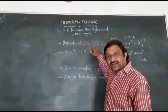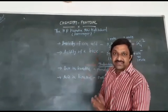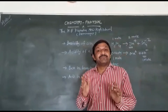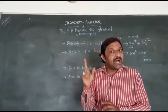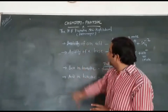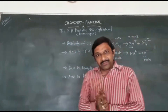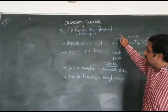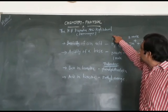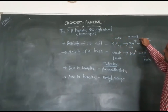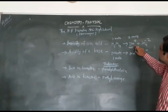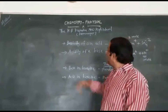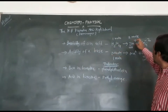Now two more topics: basicity of an acid and acidity of a base. Basicity of an acid is the number of replaceable H+ ions in the acid. For example, in sulfuric acid H2SO4, before reaction there is one mole but after reaction there are two moles of H+. So the basicity of sulfuric acid is two.